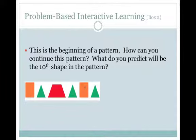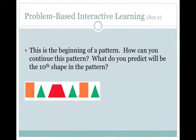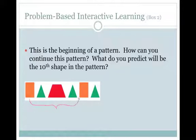Here I see an orange rectangle, and I see the same figure at the beginning followed by a green triangle. And here I see the same two. So this is where the unit stops and where the unit begins. I'm going to identify this as my unit. This rectangle is the beginning shape, so here is where the second unit will begin. I'm going to write 'unit' right below this.